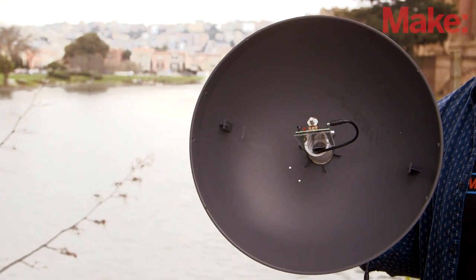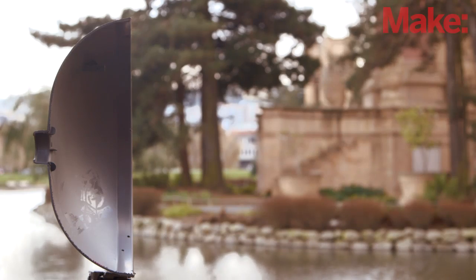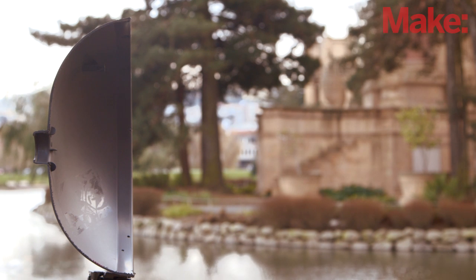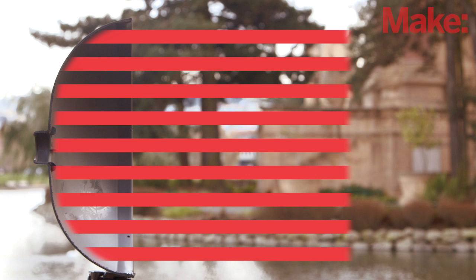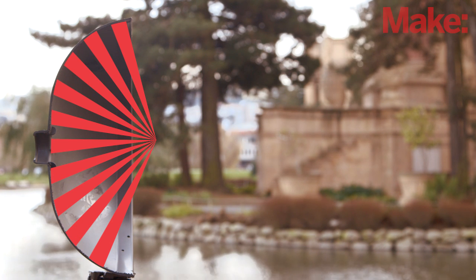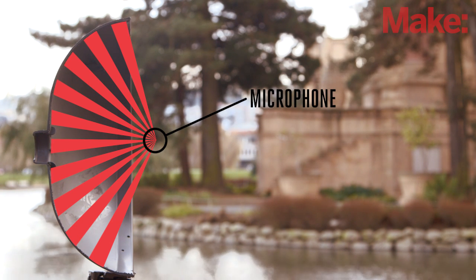A parabolic microphone works in the exact same way a satellite dish does. The large surface area of the squirrel baffle collects a lot more sound waves than your unaided ear can. The parabolic shape of the dish then reflects the sound waves to a central focus point, which is where we'll place our microphone to further amplify the sound we want to listen to.